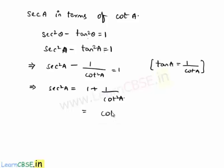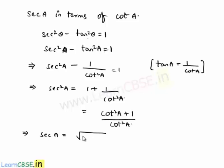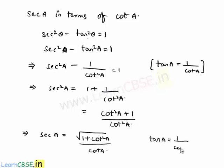Taking LCM as cot²a, we get sec²a = (cot²a + 1)/cot²a. Applying square root on both sides, sec a = √(1 + cot²a)/cot a. Also, tan a in terms of cot a is simply 1/cot a.